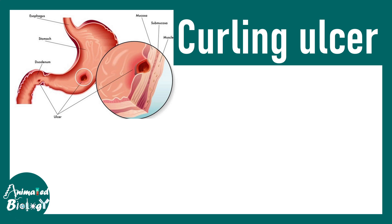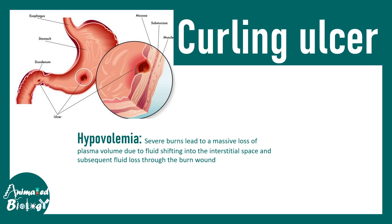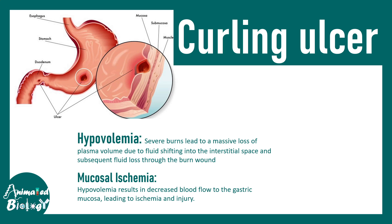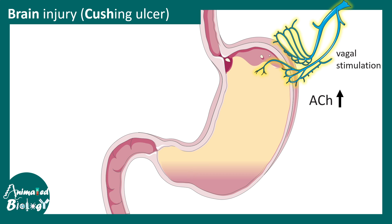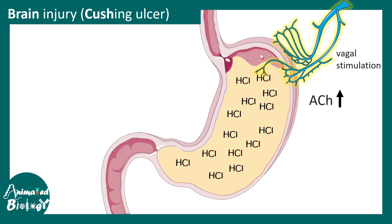Another situation is Curling's ulcer, which is a consequence of hypovolemia from severe burns and massive loss of plasma volume. Mucosal ischemia occurs because there is decreased blood flow into the gastric mucosa, leading to ischemia-associated injuries. There is also Cushing's ulcer, associated with brain injury, where hyperstimulation of the vagal nerve increases acetylcholine levels, which in turn increases gastric HCL secretion — too much acid being detrimental to the stomach lining.